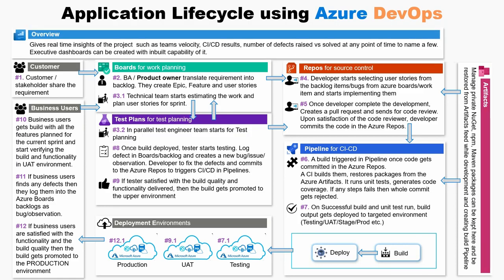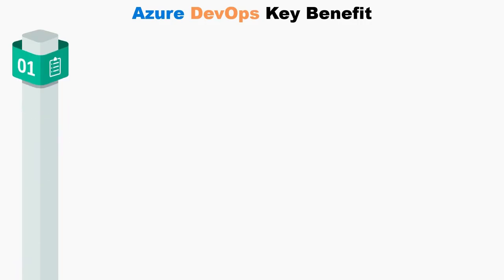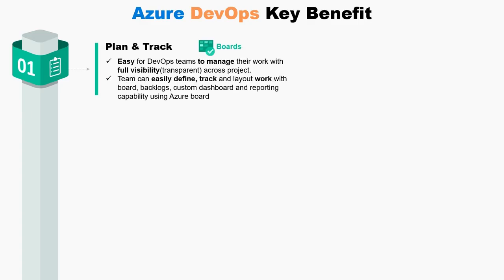Now you understand where Azure DevOps services can be used during the application lifecycle. Before we log in to Azure DevOps, it is important to understand Azure DevOps benefits. In Azure Boards, teams can manage their work with transparency across the project. It provides a rich set of built-in capabilities to support Scrum and Kanban, customizable dashboards, and integrated reporting, where teams can easily start tracking user stories, backlog items, tasks, features, and bugs associated with the project.